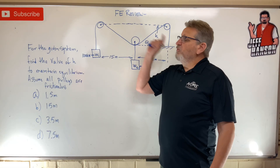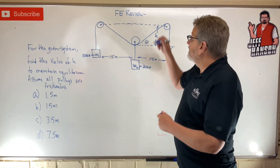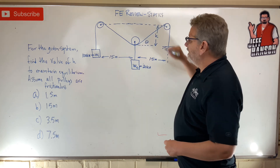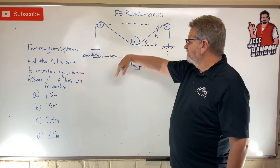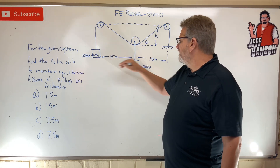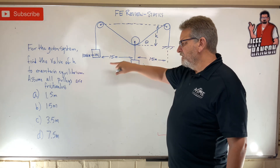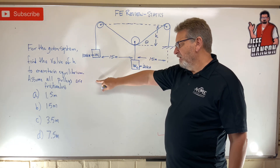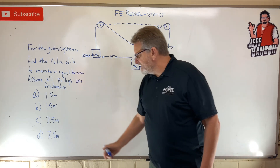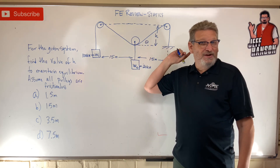Welcome back to FE review, statics problem. For the given system with weights hanging from pulleys, find the value of H to maintain equilibrium. Assume all pulleys are frictionless. Here are your choices — which one are you going to pick? Push pause, work it out, come back and I'll show you how to do it.